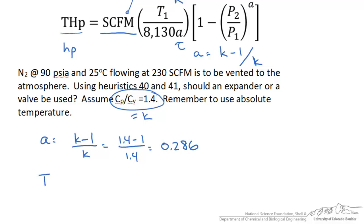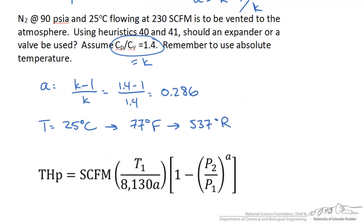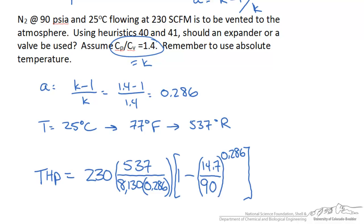Now our temperature is given as 25 degrees Celsius. We need to convert this to Rankine, 537 degrees Rankine. So we take our equations and we plug in the values given in the statement and what we just calculated. We should get the following: this gives us an answer of about 21.5 horsepower.